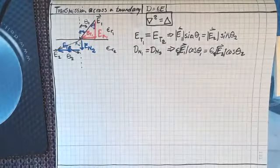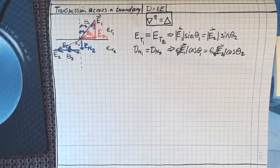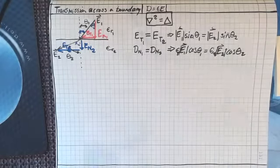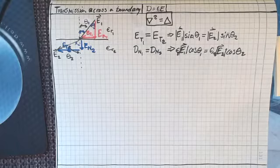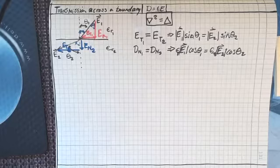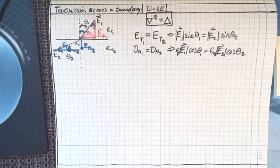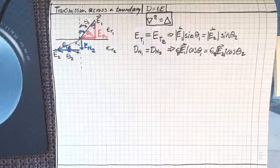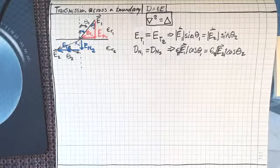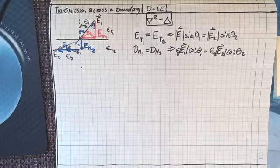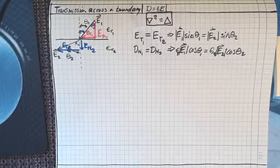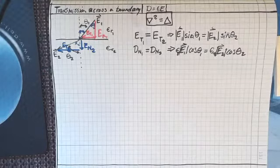So there we go — we have our two requirements for the propagation across that boundary. Now I want to look at a special case first: what if I have a conductor? We know in a conductor that the electric field E2 is zero.